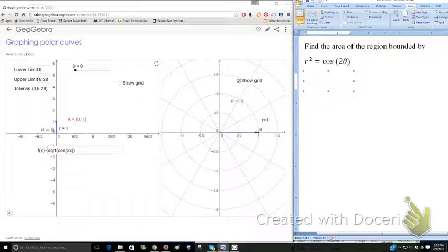The goal is to find the area of one region bounded by r squared equals cosine of 2 theta. Now in order to get our limits of integration, it might be nice to plot this. This particular plotter wants it given as a function, so I'm going to take the square root of both sides and plot the square root of cosine of 2x.